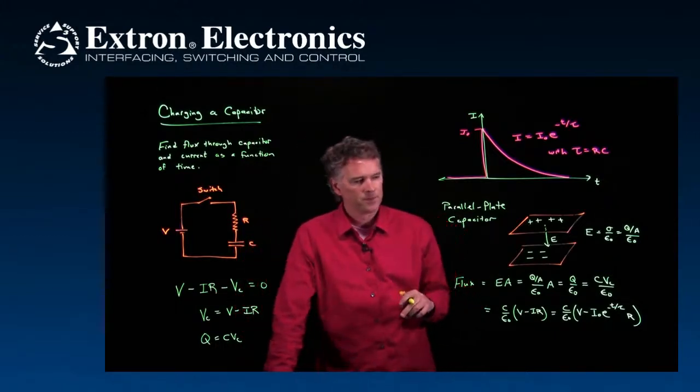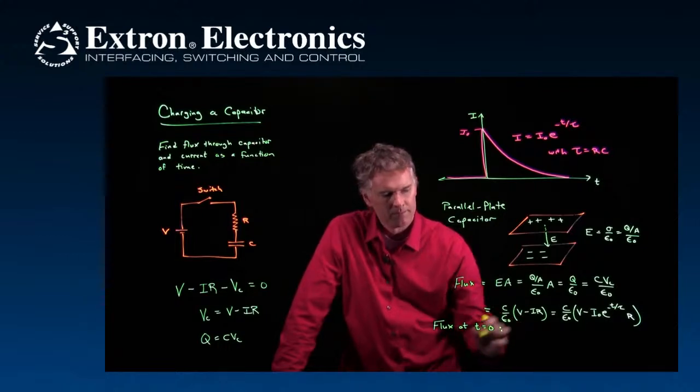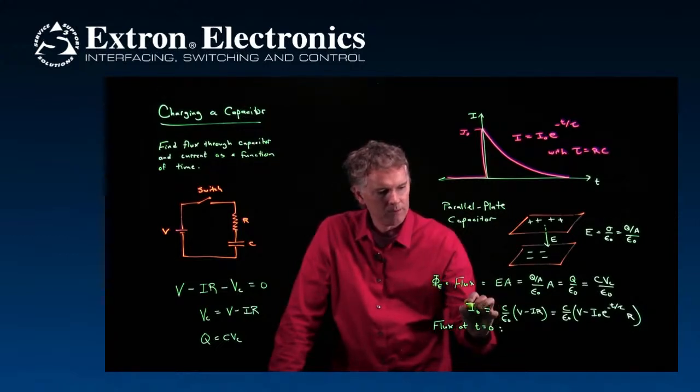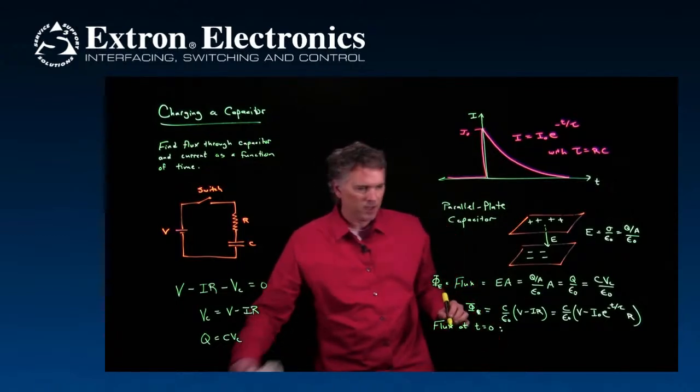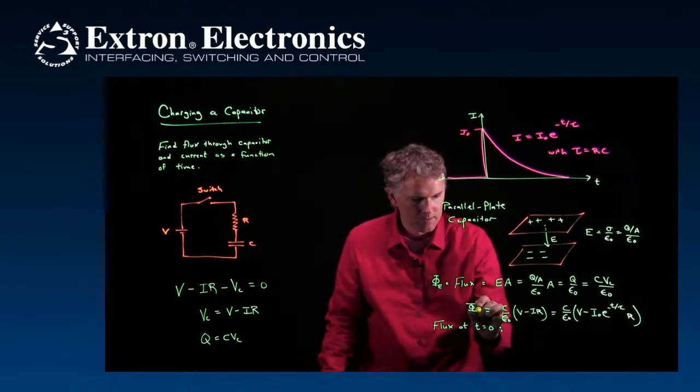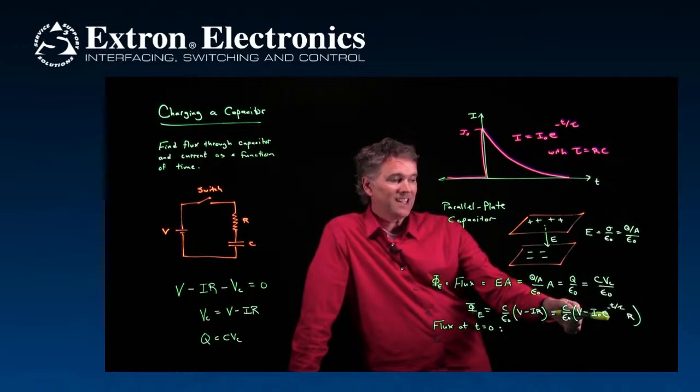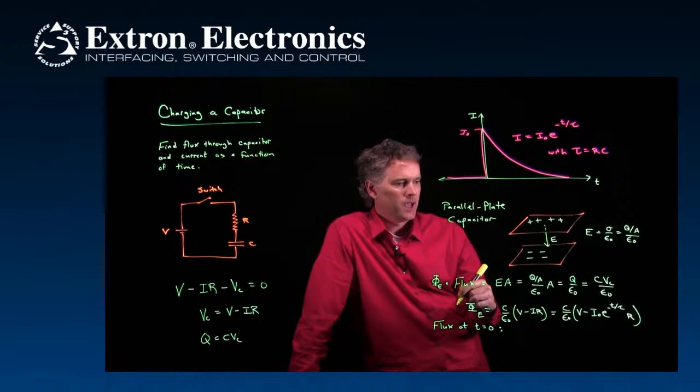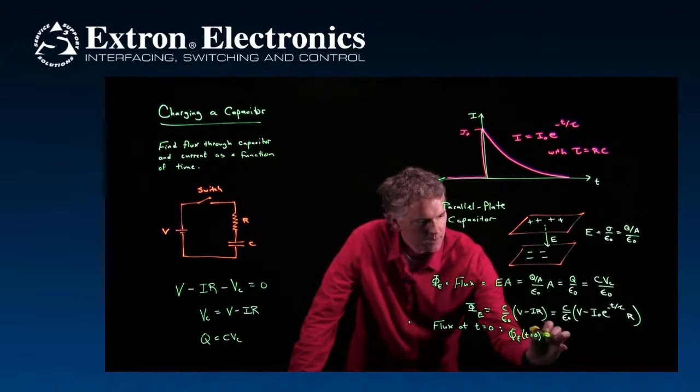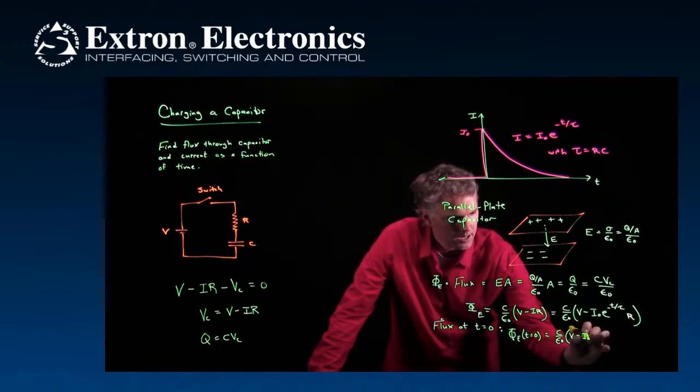Let's look at two extremes. What is the flux at T equals zero? And flux we usually write as a phi. We'll call it phi sub E for electric field. What is the electric field flux at T equals zero? Well, we just plug in T equals zero to this equation. And if I plug in T equals zero, what is E to the zero? It is one. And so I just get the flux at T equals zero is equal to C over epsilon naught times V minus I naught R.